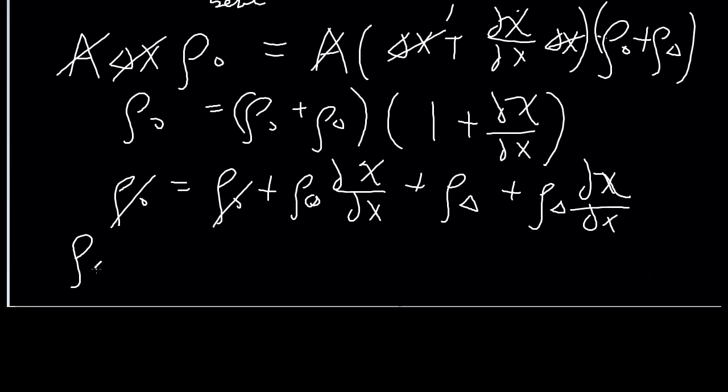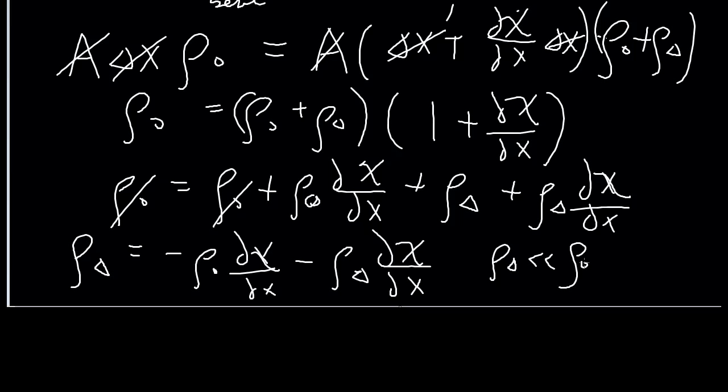Moving the change in density onto the other side, we get negative rho_0 d_chi/dx minus rho_delta d_chi/dx. And, of course, saying that rho_delta is much, much smaller than the average, we'll cross out this term and we end up with this, which tells you the change in density is related to how fast the different edges are moving differently from each other, which tends to make sense. And the negative sign tells you that if the front edge moves faster than the back edge, you'll get decreasing in density and vice versa, which also makes sense.